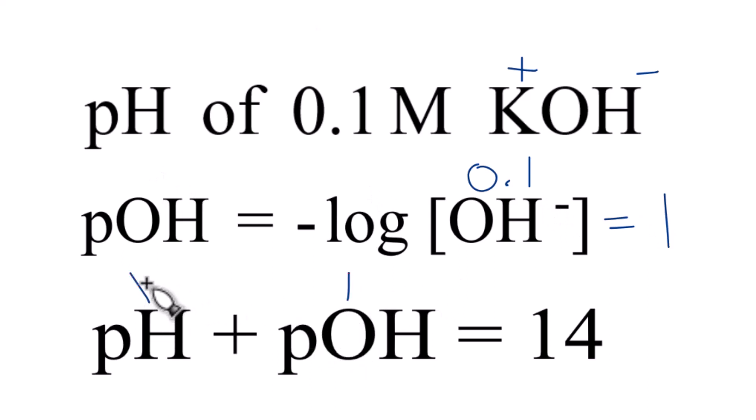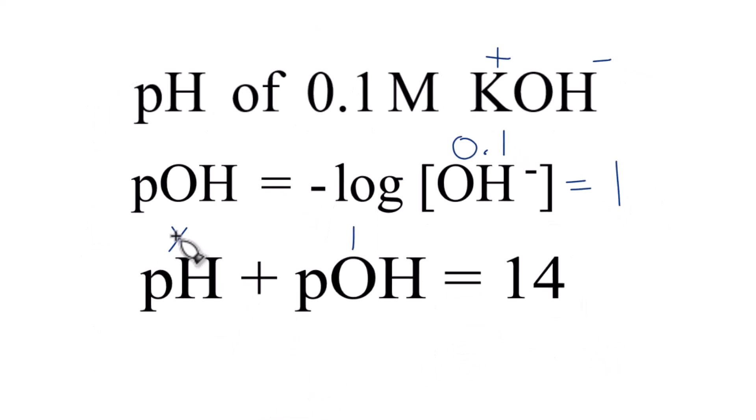So some number plus 1 gives us 14. Well, 13 plus 1 gives us 14. So the pH of a 0.1 molar solution of KOH, potassium hydroxide, is 13.